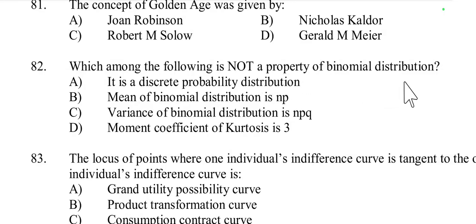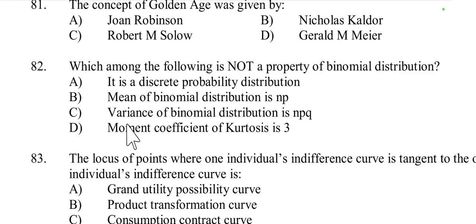Question number 82: Which among the following is not a property of binomial distribution? The options are: it is a discrete probability distribution, mean is n×p, variance is n×p×q, and moment coefficient of kurtosis is 3. The incorrect option is D — the moment coefficient of kurtosis is not necessarily 3 for a binomial distribution; it depends on the parameters and can vary. Options A, B, and C correctly describe properties of binomial distribution, so option D is correct.